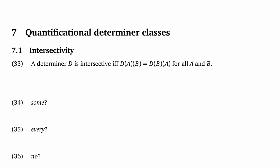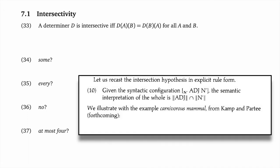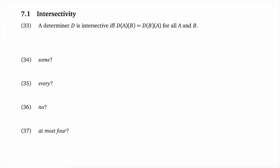In each case, what we want to do is first understand what the property is at a technical level, and then we want to figure out how to articulate why the property might be important for understanding language and cognition. One brief note about terminology: intersectivity for determiners is different from the property of adjectives that Part T called intersective. You'll likely see why the same basic term is used in both contexts, but it's probably best to simply view them as separate concepts for now.